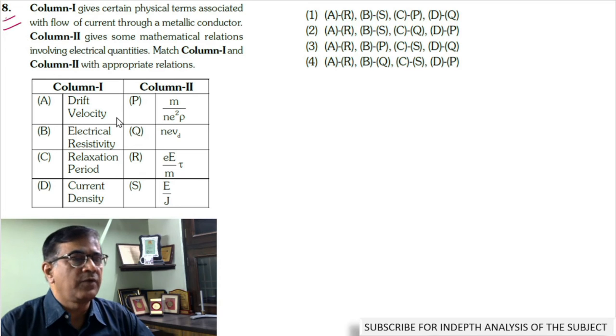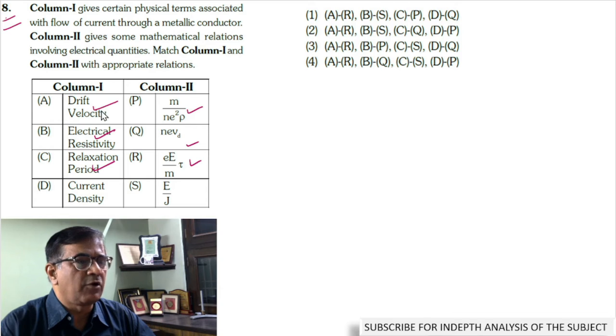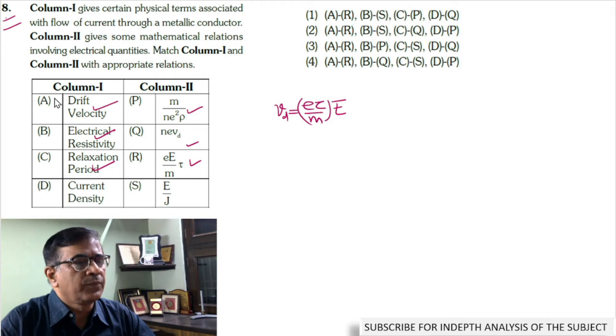In problem number 8, we are supposed to relate physical terms of column 1 with the corresponding formulas in column 2. The first term is drift velocity, given by V equals E tau by m. So E matches with R.